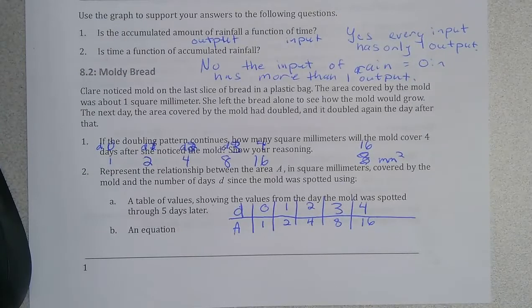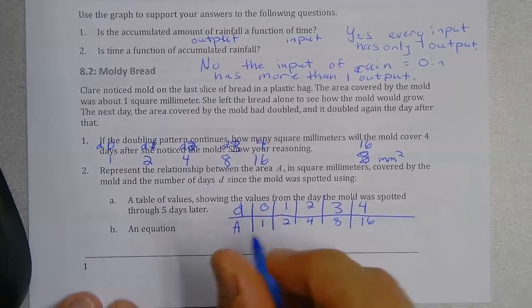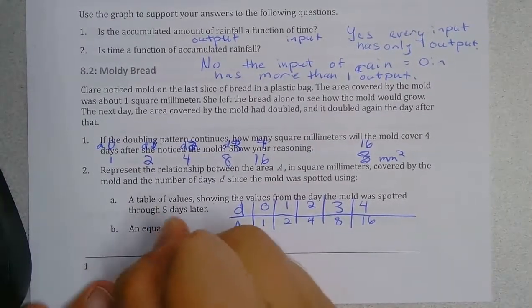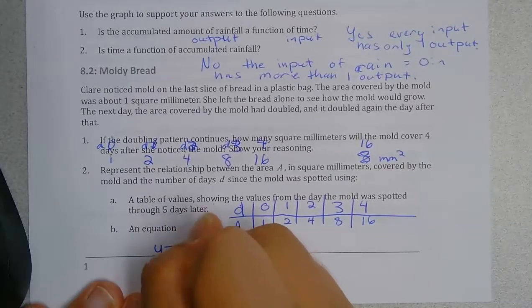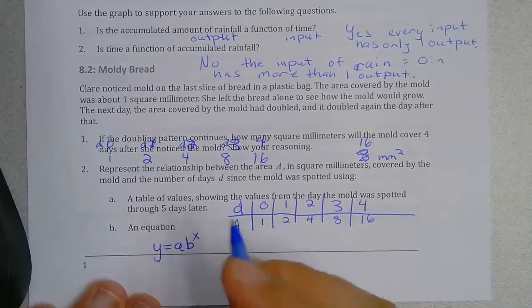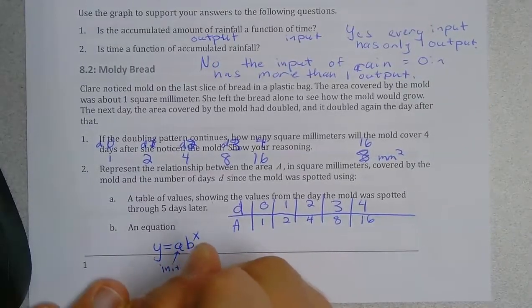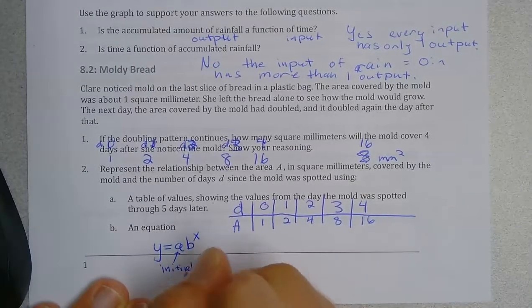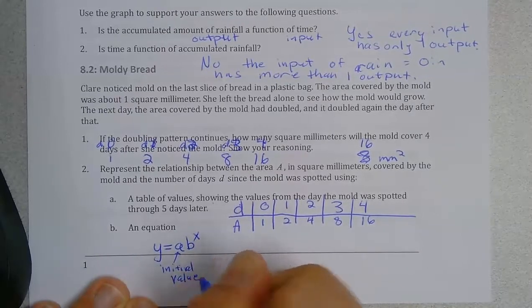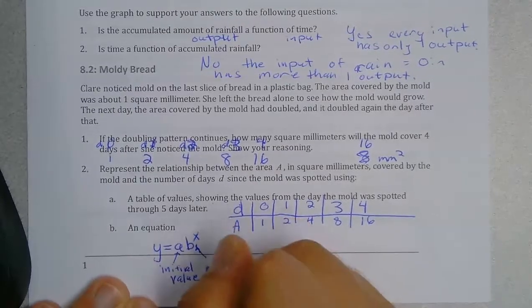So to write an equation for this, what we would do is remember our exponential equation is of the form y equals a times b to the x where a is your initial value and b is your growth factor.